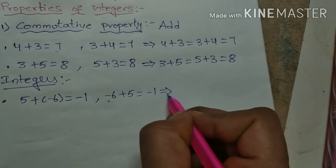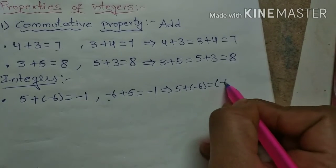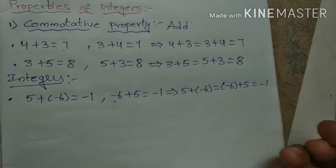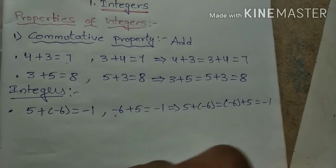So 5 + (-6) equals -6 + 5, how much? Minus 1 only is the result. If we change the order, there is no change in the result, yes or no?